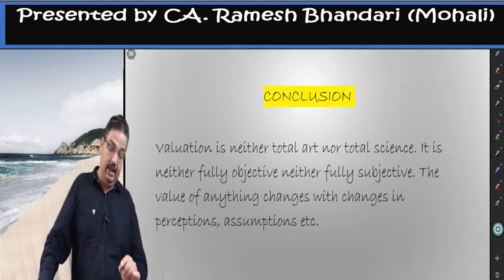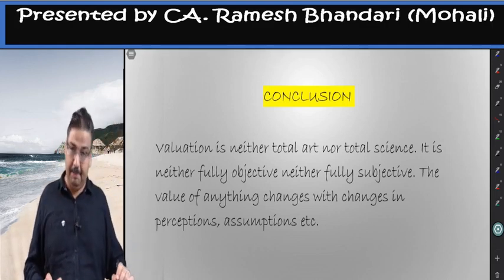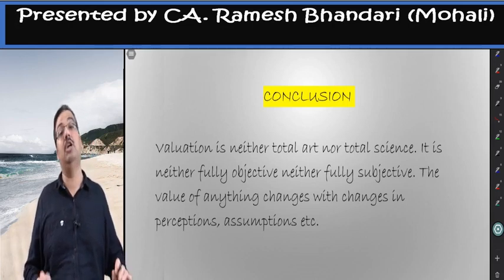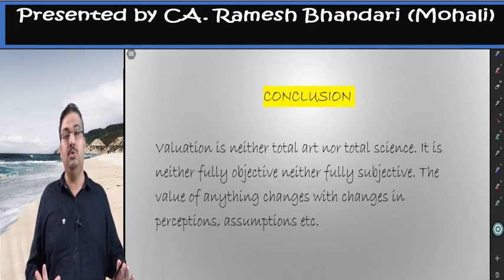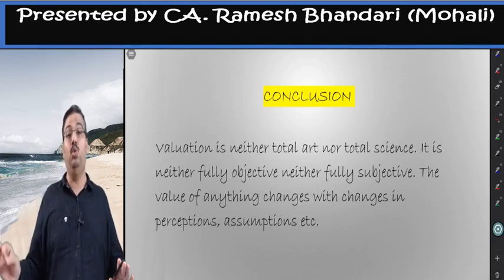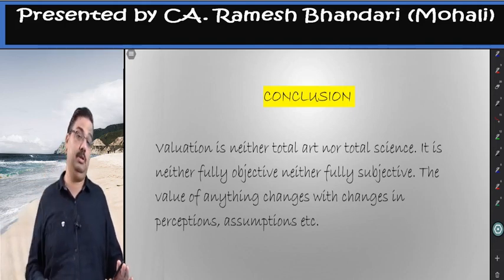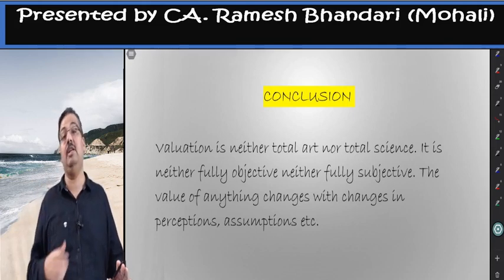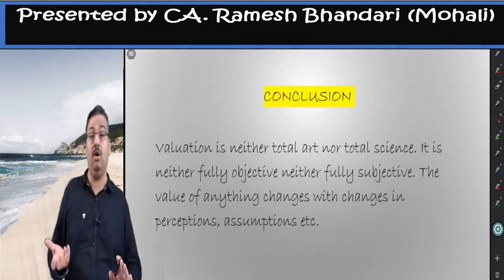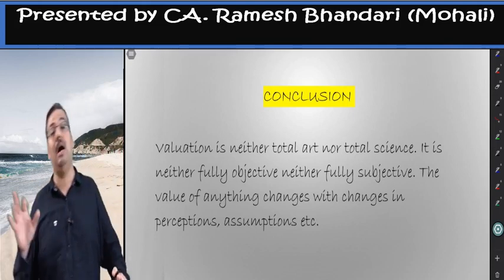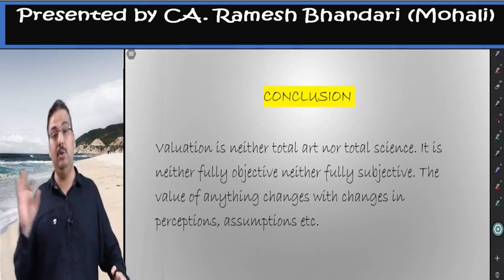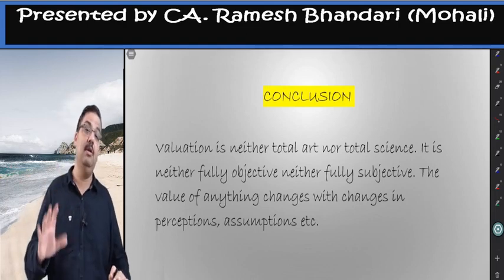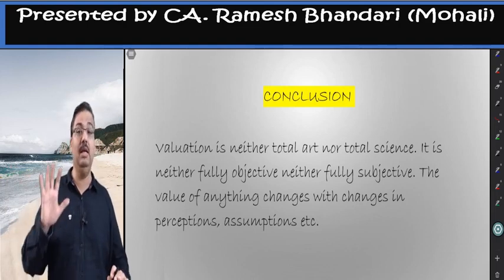The value of anything changes with changes in perceptions, assumptions, and the method you apply — change the method and the value will change. So it is not '2 plus 2 equals 4' always. It is the application of inexact science along with art to arrive at a particular value. This is valuation in general.